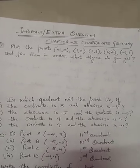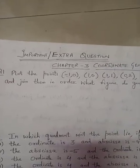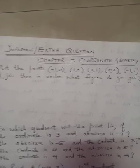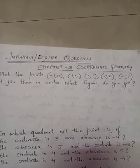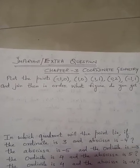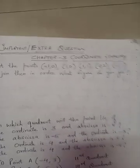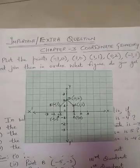Today we are doing important questions of coordinate geometry. The first question is: plot the points (-1, 0), (1, 0), (1, 1), (0, 2), (-1, 1) and join them in order. What figure do you get? We will plot it on the graph paper.